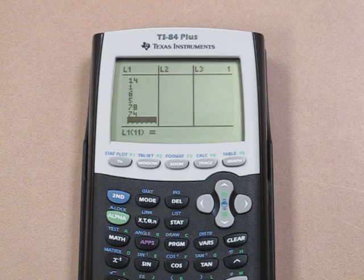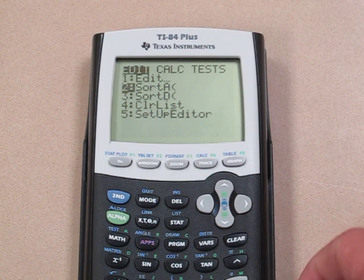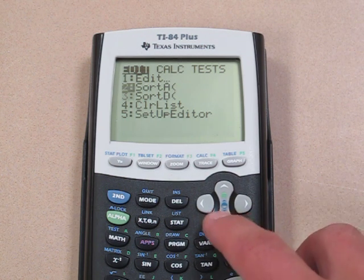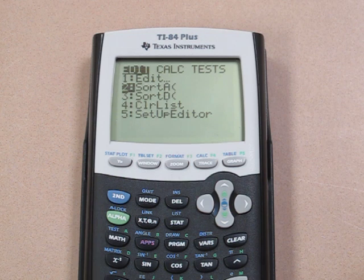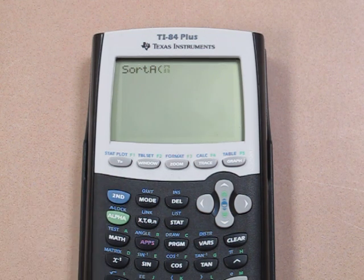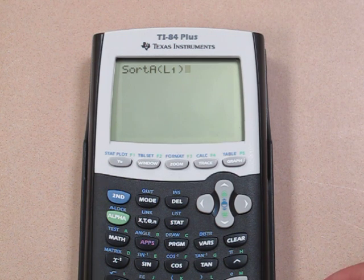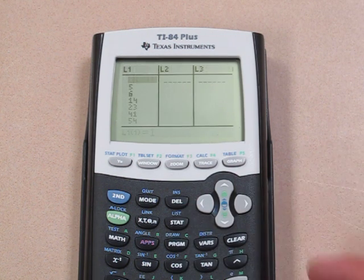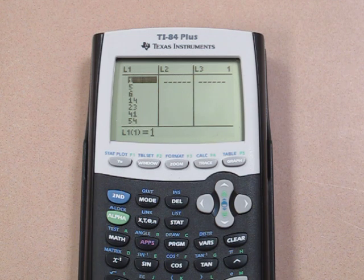And suppose we want those values in order. We can tell the calculator to sort the list in ascending or descending order. So we're going to sort in ascending order, and we want to sort 2ND and I'll push 1. We want to sort list 1. Now if we go back to list 1, we see it's sorted from least to greatest.